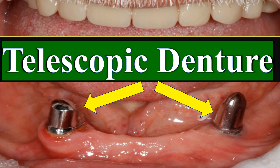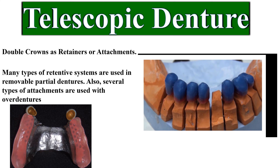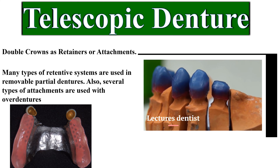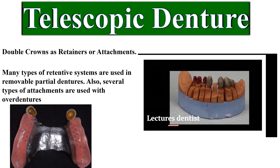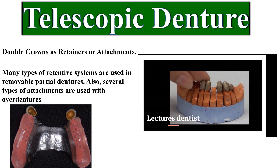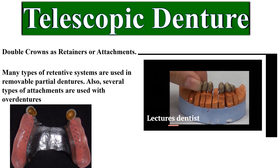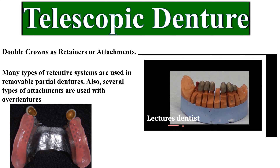Telescopic denture. Many types of retentive systems are used in removable partial dentures. Several types of attachments are also used with overdentures. One of those systems that may be used as retainers for partial dentures or as attachments for overdentures is the double crown system or telescopic attachments.